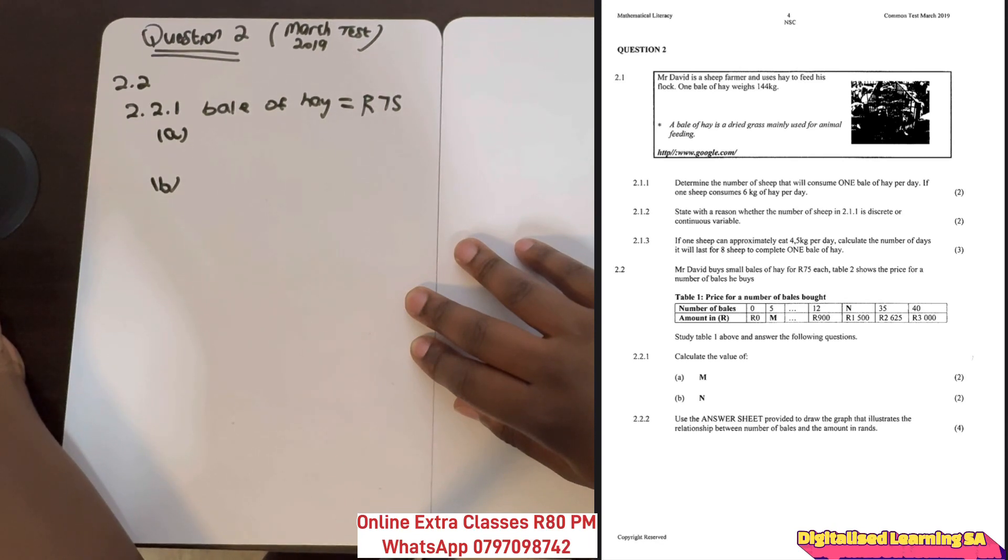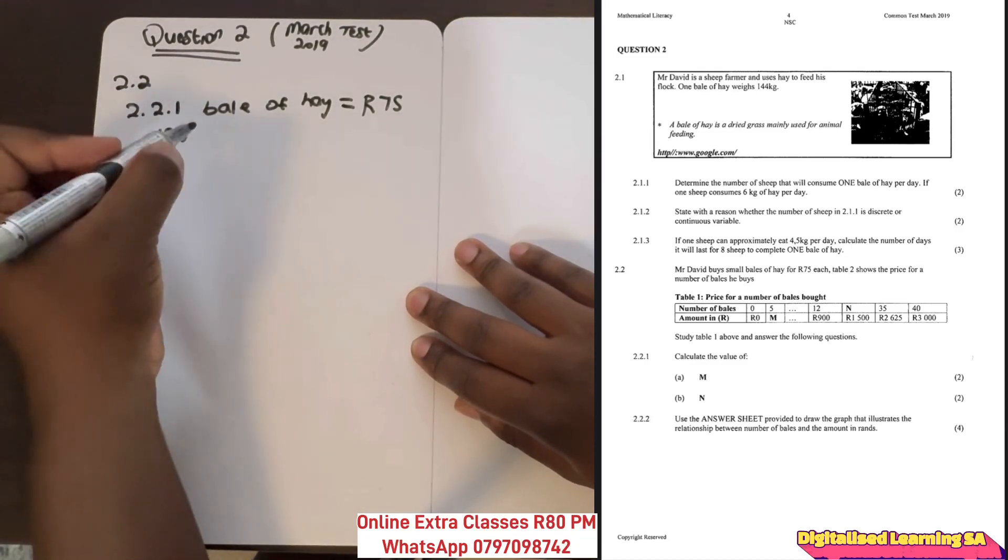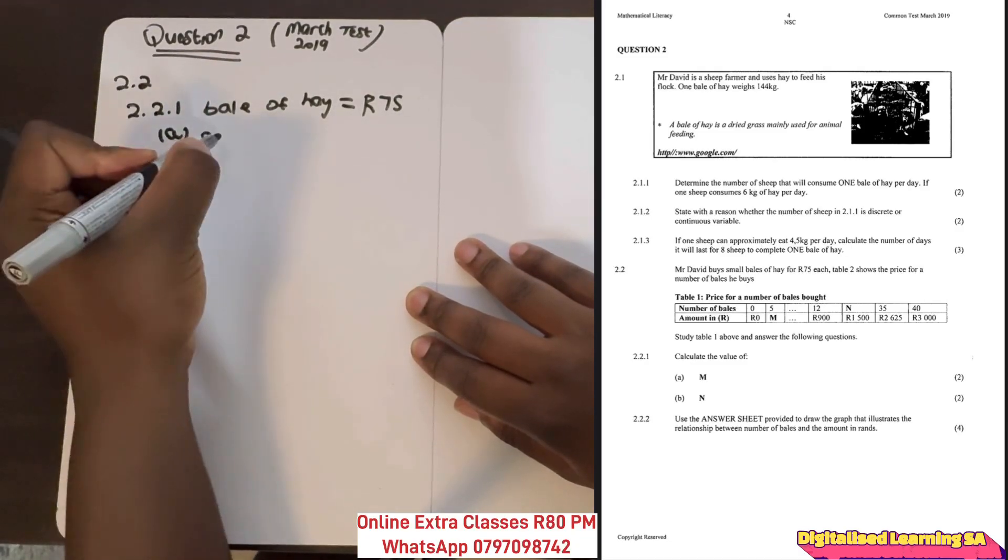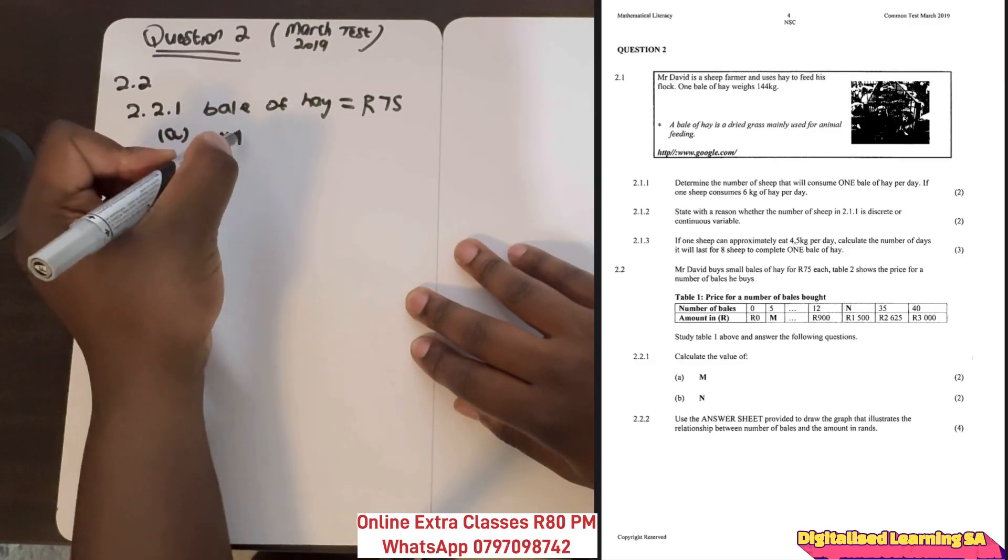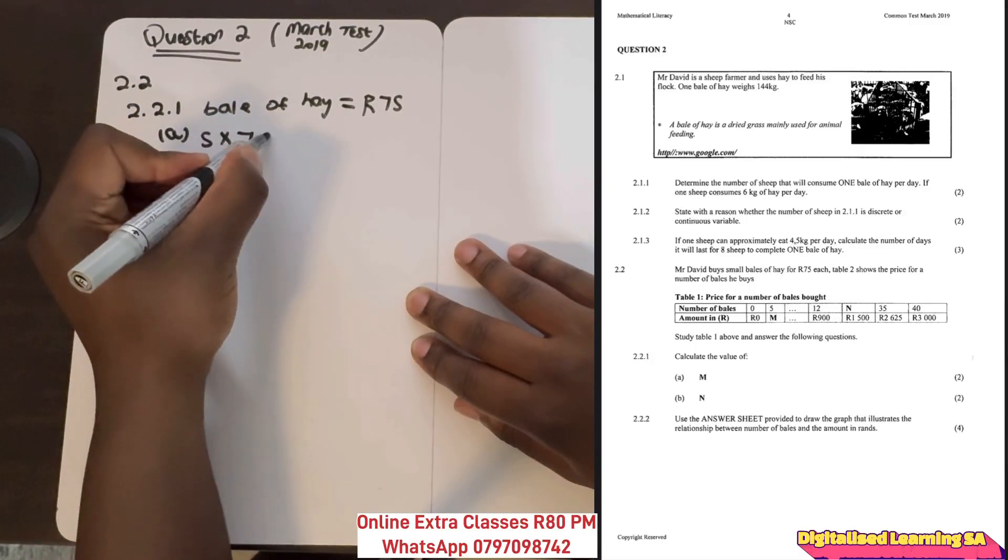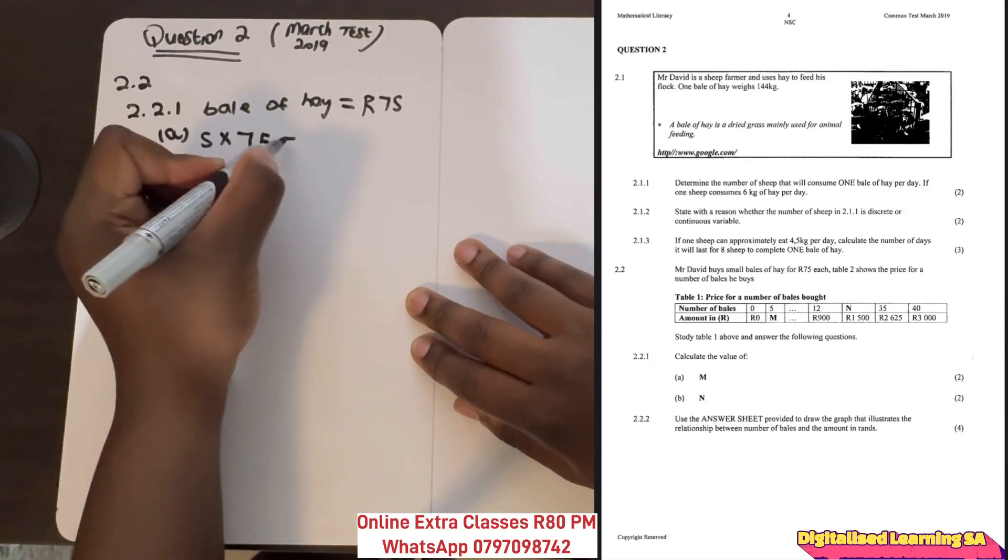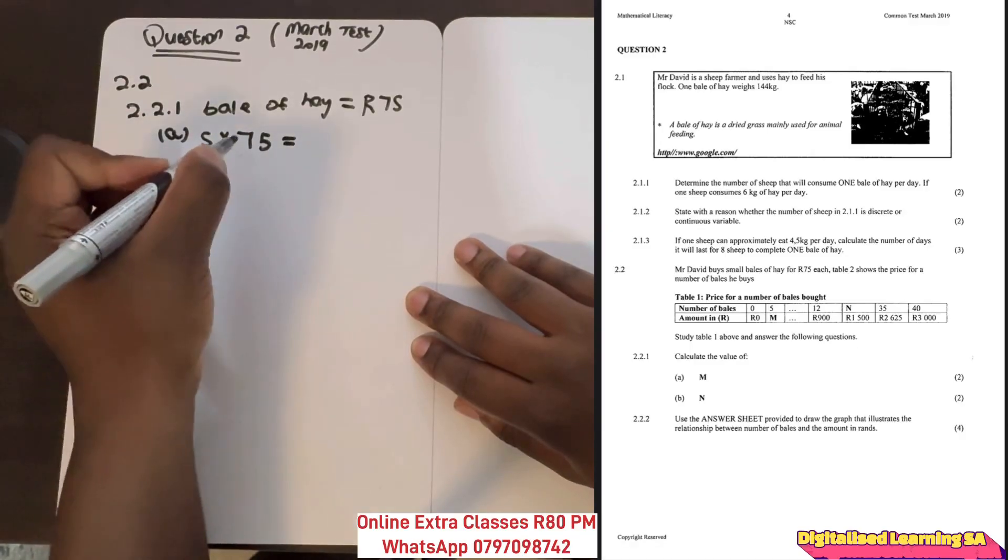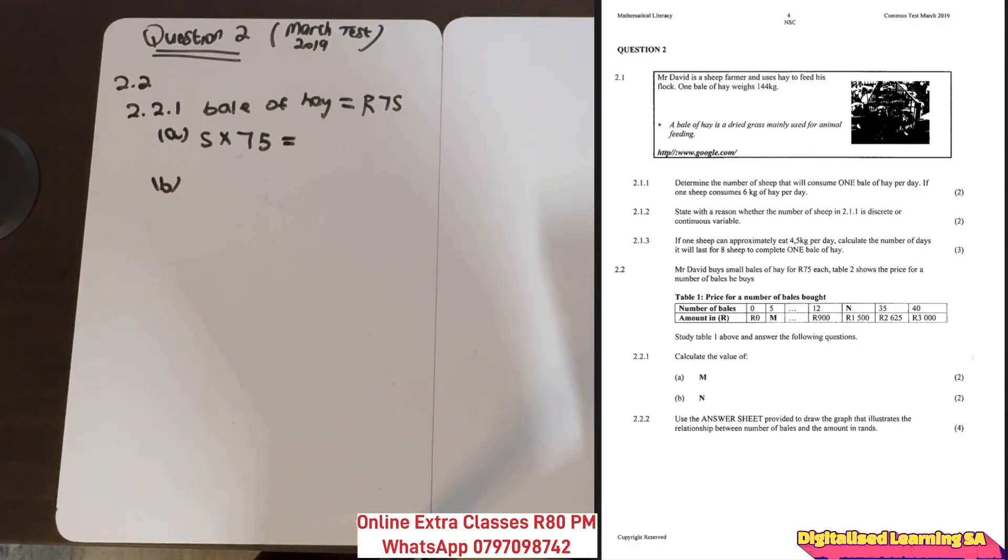With m, we are given the number of bales but we don't know how much it costs. To get the cost, we multiply 5 bales by 75. This tells us how much these 5 bales cost. If we calculate that, we get 375.